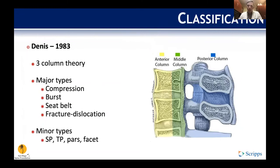Going into classification systems, looking through the literature, there are many different types of classifications. They're evolving, with new classifications coming out in the last decade or two. When there are a lot of systems that are constantly changing, it usually means there are holes in them — and this is an area the orthopedic spine community is still striving to perfect.